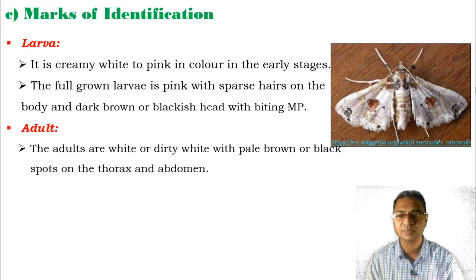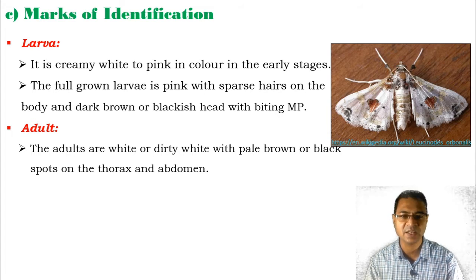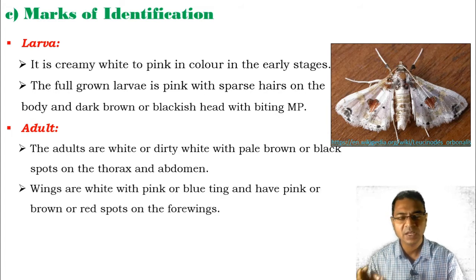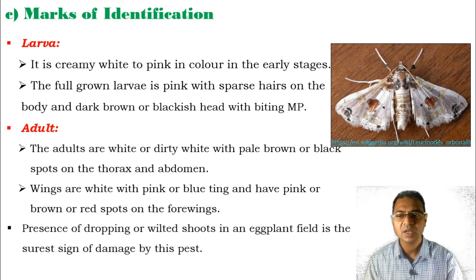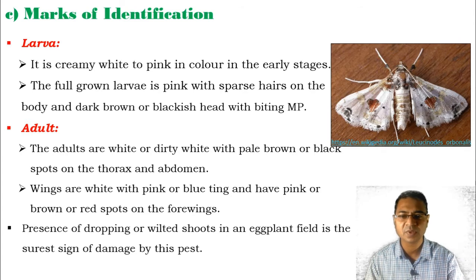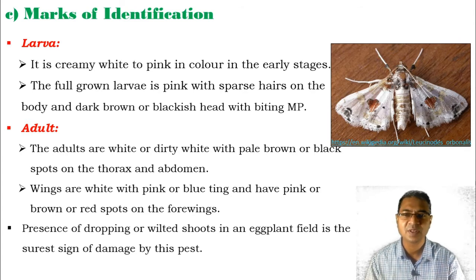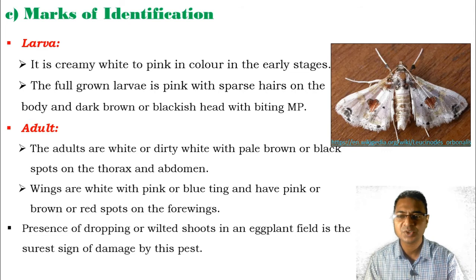The adults are white or dirty white in color with pale brown or black spots on the thoracic as well as the abdominal region. The wings are white with pink or blue tinge patterns and have pink, brown, or red spots on the forewings especially. The presence of drooping or wilting shoots in the eggplant or brinjal field is the surest sign of damage by this pest.